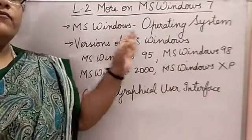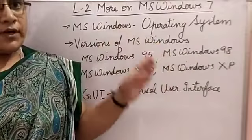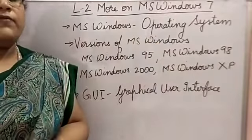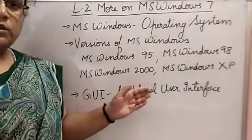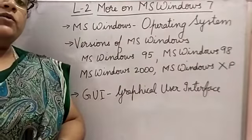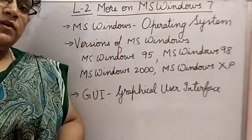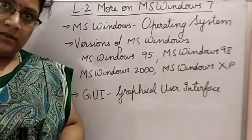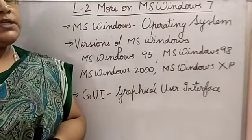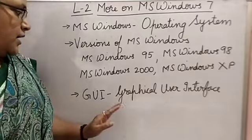These are versions of Windows, or flavors. We can call them flavors or versions, and there are many more. We commonly use Windows 7, MS Windows 7, as the operating system. It's very common in our PCs.